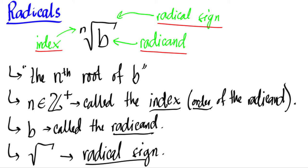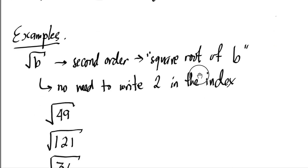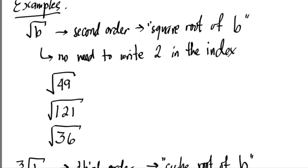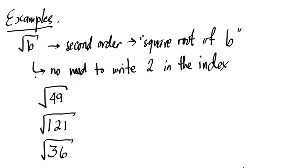We're going to give some examples of these radicals. Let's start with the very basic: a radical of the second order. Notice that there's no index written. We don't need to write an index of 2 whenever we talk about square roots. We call this a square root, or a second-order radical. When there's a blank in the index position, it's automatically 2.